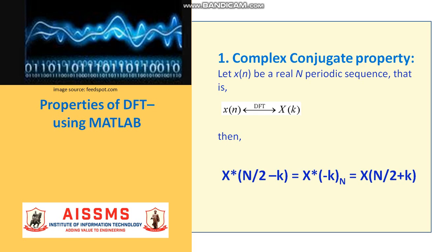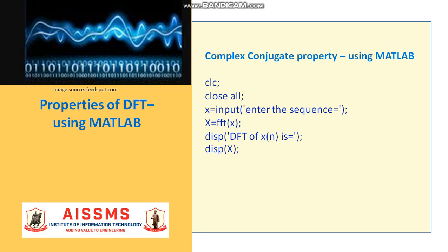Let us begin with complex conjugate property of DFT. Let X be a real N periodic sequence. DFT of X gives X, then X conjugate of N/2 minus k is equal to X conjugate of minus k which is equal to X. We know that DFT exhibits this property. Here is a small program to observe this property. First we enter the required sequence.